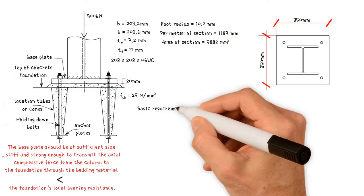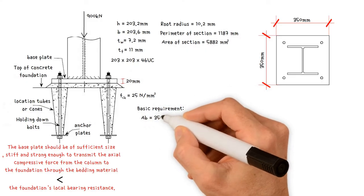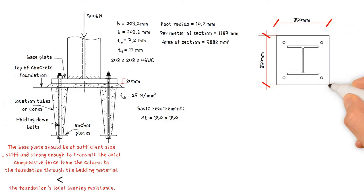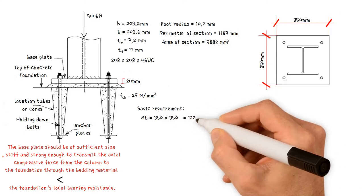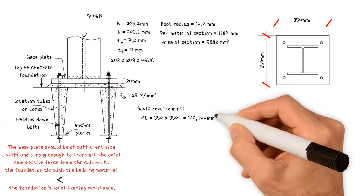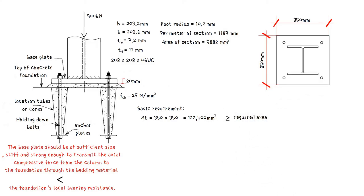To begin, the basic requirement, the baseplate 350 millimeters by 350 millimeters, which is 122,500 millimeters squared, should be equal or greater than the required area.